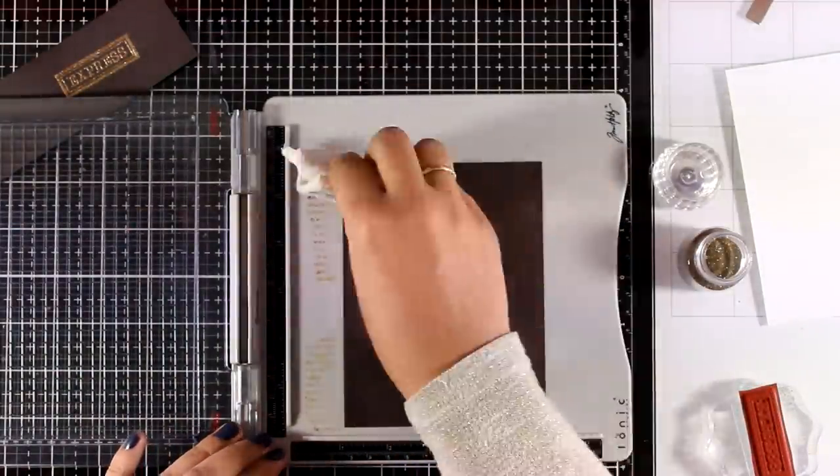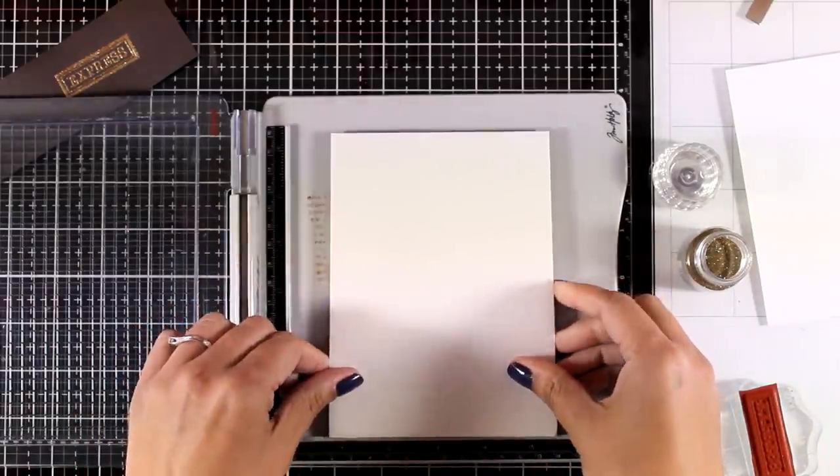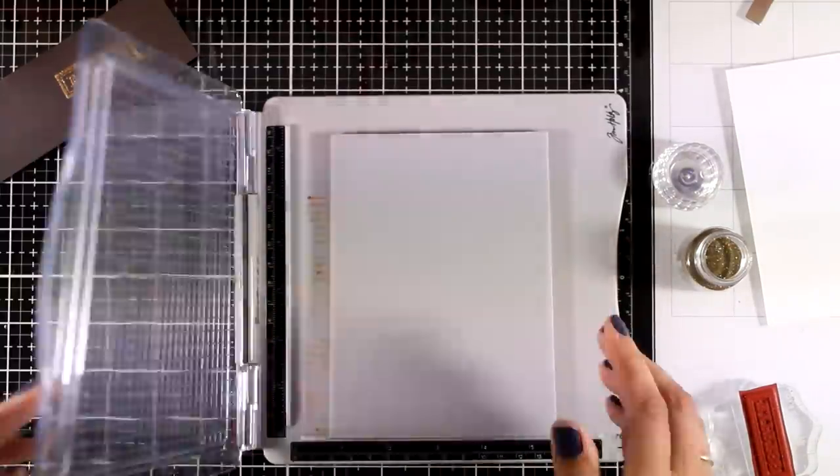And I'm going to do some more embossing, this time I'm working on a 4.25 by 5.5 brown cardstock. I'm going to place on top the stripes background, peel off the backing and I'm just going to throw it away, I don't need it anymore.